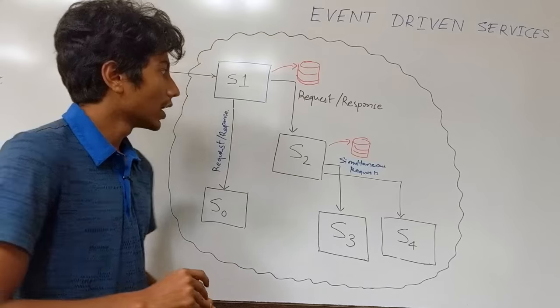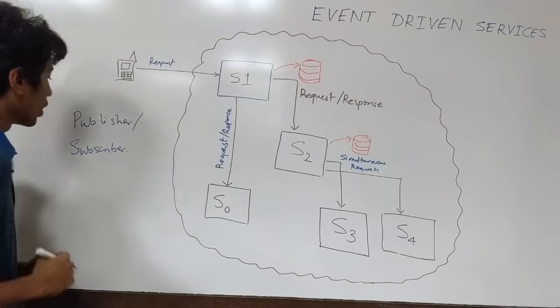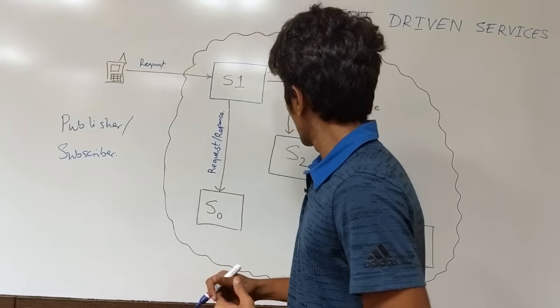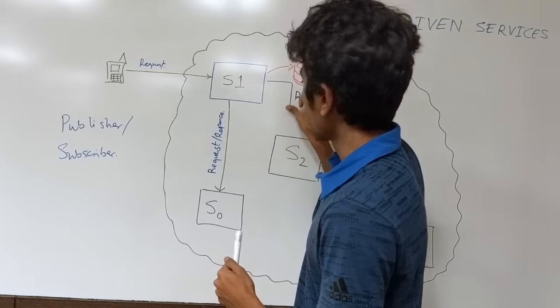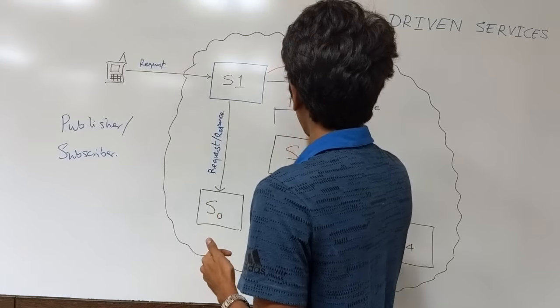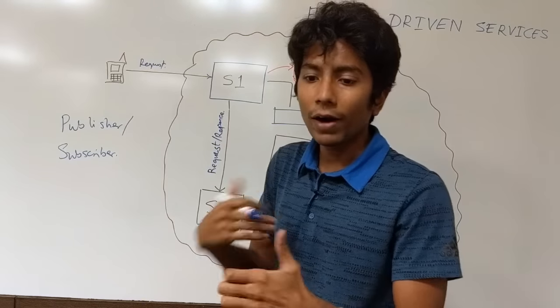The better way to handle this is something called a publisher subscriber model. With the publisher subscriber model, what we can do is we can remove this kind of dependency on the request and response and make it pass a message. Messages are fire and forget.